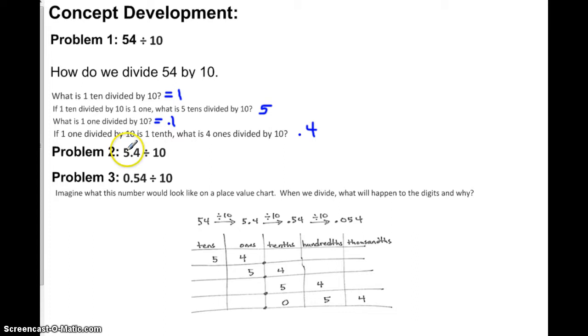Problem number 2 is 5 and 4 tenths divided by 10. So if we know this up here, if we know 54 divided by 10, right, is 5 and 4 tenths because here we took it apart, right? So the answer is 5 and 4 tenths because we took it apart. We took the 10 divided by 10 is 1. The 5 divided by 10 is 5. The 1, this 1 divided by 10 is 1 tenths. And this 4 divided by 10 is 4 tenths. So we are left with 5 and 4 tenths for this question.